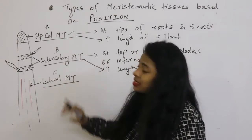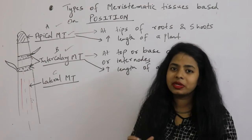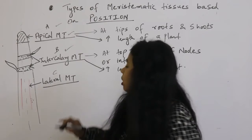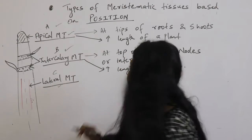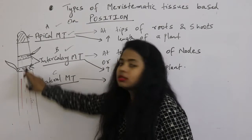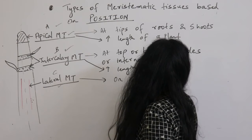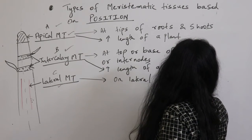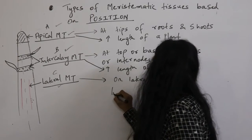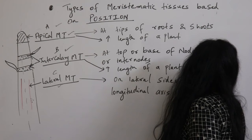It is going to increase the diameter of the stem or root. If you want to increase the length, apical and intercalary meristematic tissues will help. But if the plant wants to increase its diameter, then lateral meristematic tissue will help. It is present on the lateral sides of, or laterally to, the longitudinal axis of a plant.